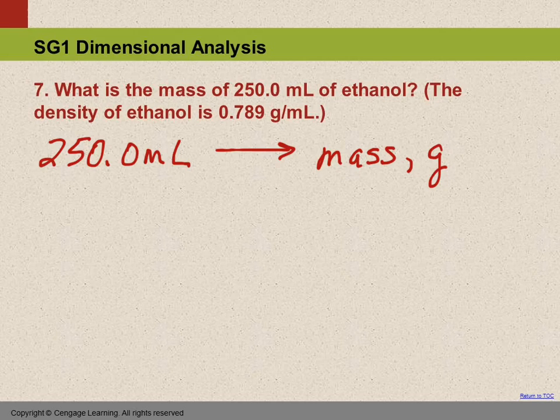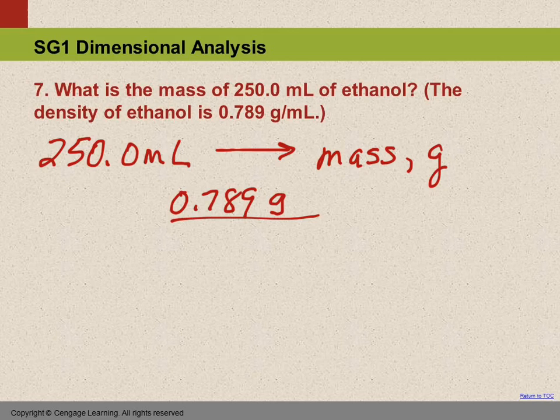So we're going to use density as a conversion factor. So when you have that density like that, write it out like this. 0.789 grams per milliliter. That looks more like a conversion factor, doesn't it?